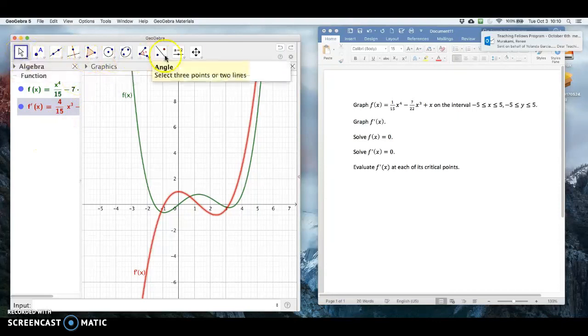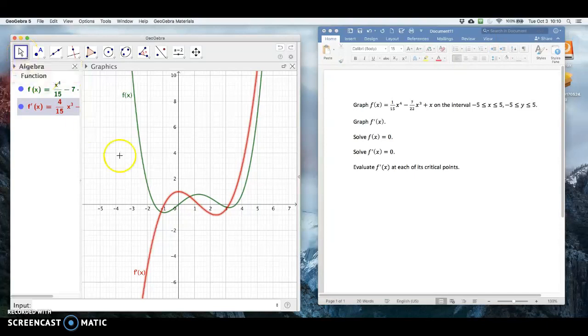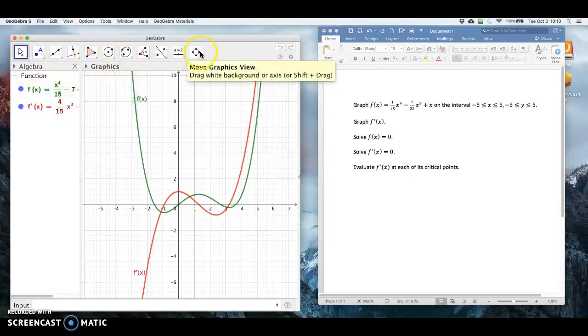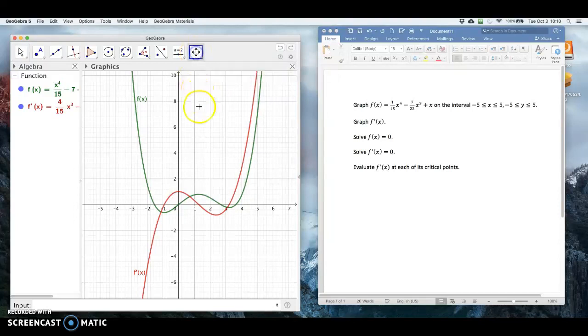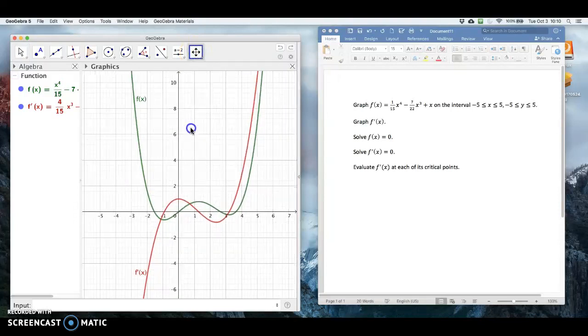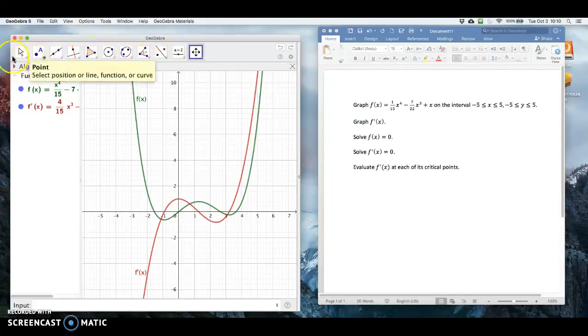One other thing to notice, at the top you have all these options right here. The move button is how to select and drag objects, like if I want to move the label of each graph. If you want to move the background, you want to click on this button right here, move graphics view, and I could click and drag this around. So usually, for the most part, for this lab at least, you're going to stick with these two options on the top.